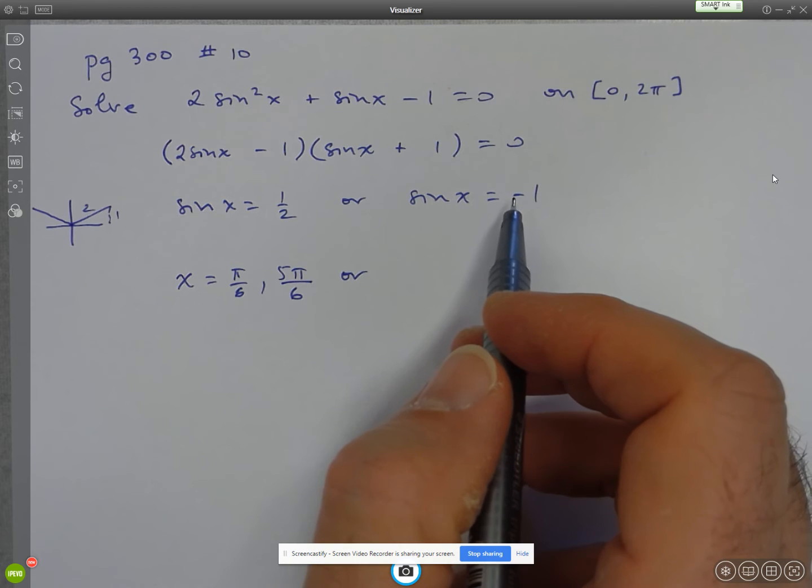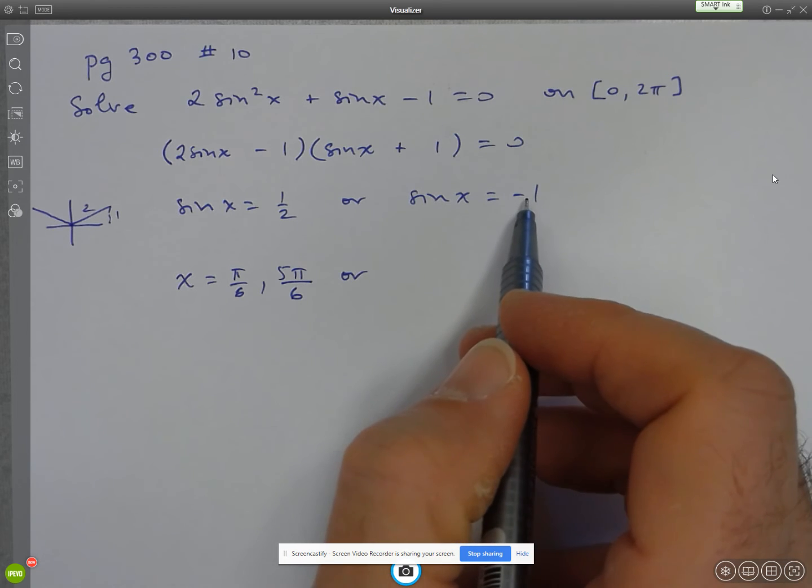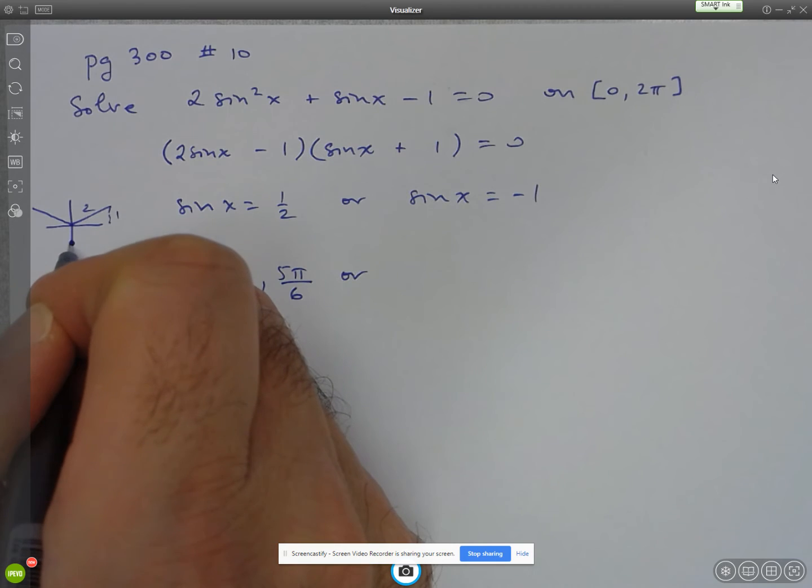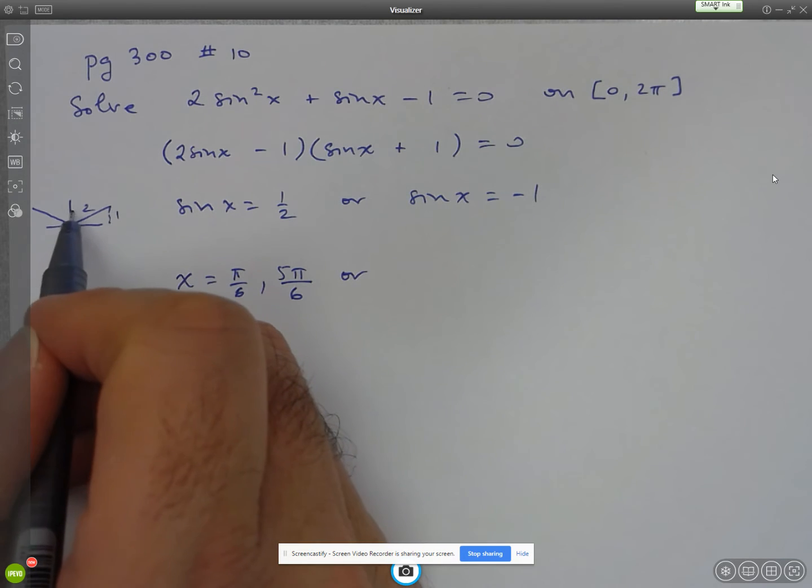So here, remember, this is y over r. So my y value has to be negative 1. So that means that I'm on the negative y axis. And, of course, that's 3 pi over 2.